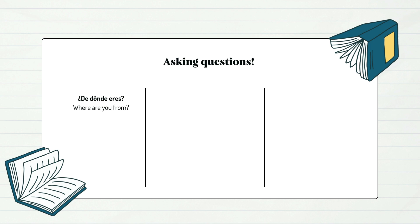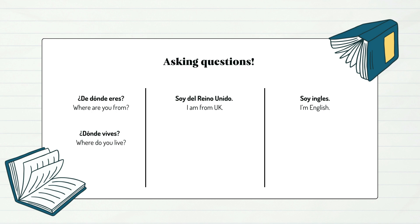Also, you might want to know where they are from, so you can ask: ¿De dónde eres? — Where are you from? A simple answer can be: Soy del Reino Unido — I'm from the UK — or Soy inglés — I'm English. You can also ask: ¿Dónde vives? — Where do you live? And answer: Vivo en el Reino Unido — I live in the UK.